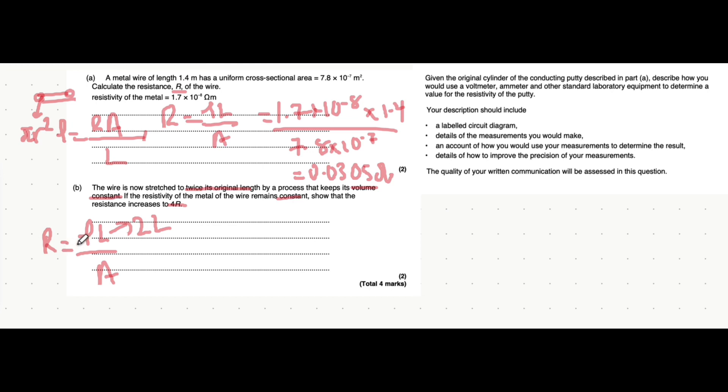Well, how can that happen if the resistance is constant? Sorry, resistivity is constant. Well, it happens if the area itself changes. So, let's think about it. If we double the length but the volume is constant, how does that affect the area?